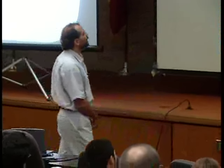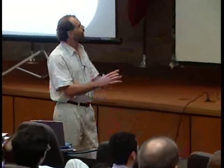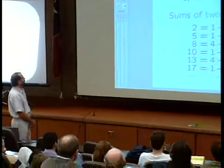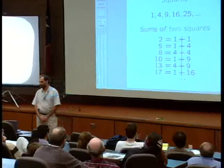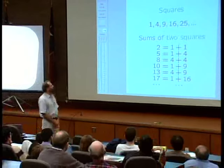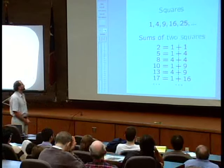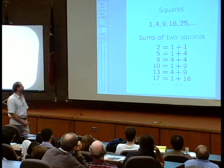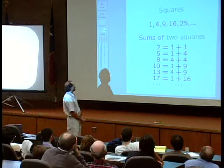The squares are the numbers 1, 4, 9, 16, 25, and so on. So let's look at numbers that are sums of two squares. We can just go through the squares and add them and see what numbers we get. Here's the beginning of the list of all those numbers which are sums of two squares. So 2 is 1 plus 1, 5 is 1 plus 4, and so on. From here we see that 7 is not the sum of two squares.